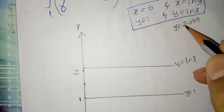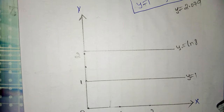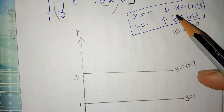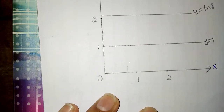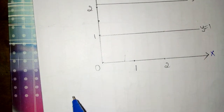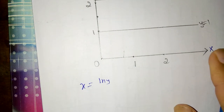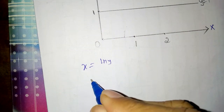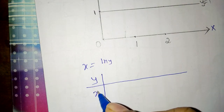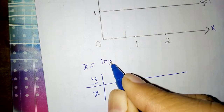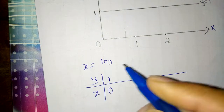Now they give another equation: x is equal to ln(y). We have the equation x is equal to ln(y). If we put any value in y, we get the corresponding x. If we put y as 1, then ln(1) is always 0, so we get x is equal to 0.